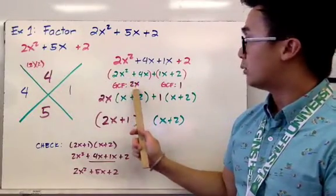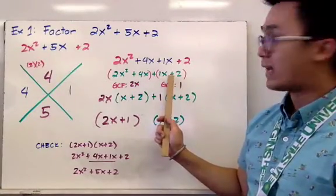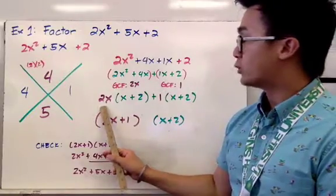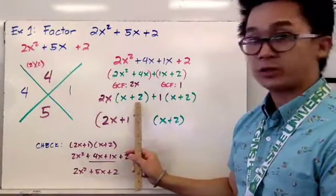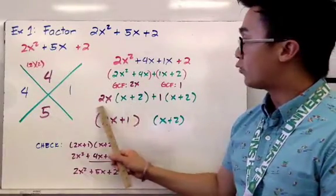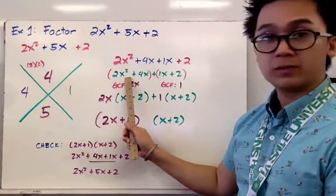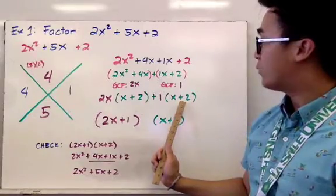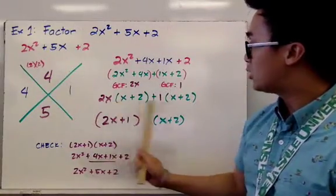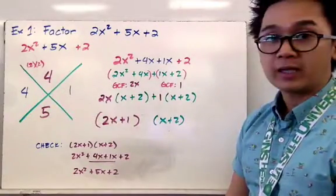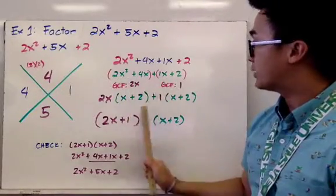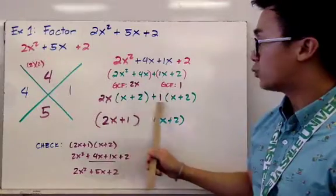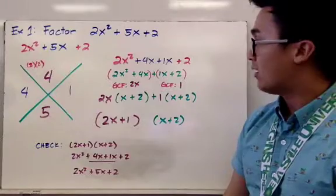The GCF of the first group, 2x squared plus 4x, is 2x, leaving (x plus 2) inside. For the second group, 1x plus 2, the GCF is 1, leaving (x plus 2) inside as well. Both parentheses are now identical — (x plus 2) — giving us a common factor we can pull out, leaving 2x plus 1 from the second stage.